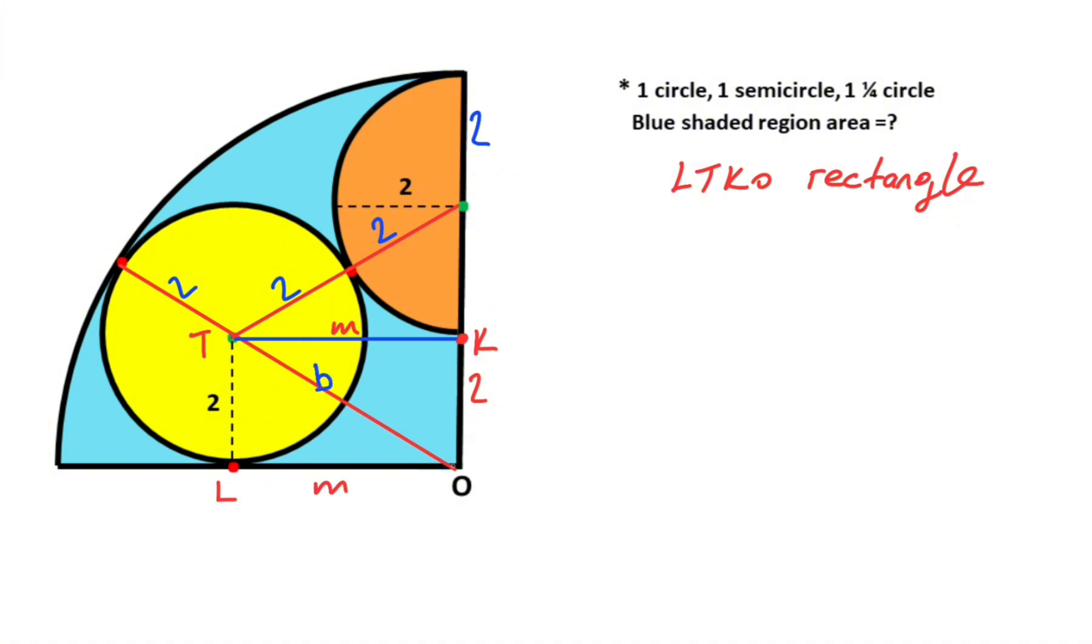After that, I want to represent this length with b. If you notice that radius of the quarter circle equals b plus two, right? So notice that this length is also radius. That means b minus two left here.